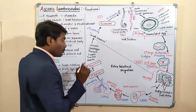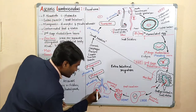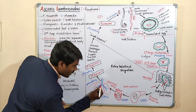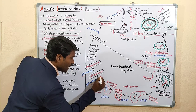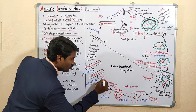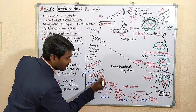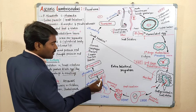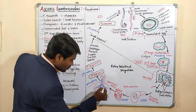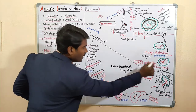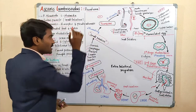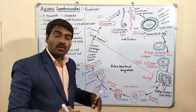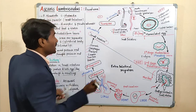The fourth-stage rhabditiform larva moves from the alveoli to the bronchioles, then to the bronchi, then to the trachea, trachea to larynx, larynx to pharynx, pharynx to esophagus, esophagus to stomach, and finally back to the small intestine. In the small intestine, it undergoes the fourth molting.